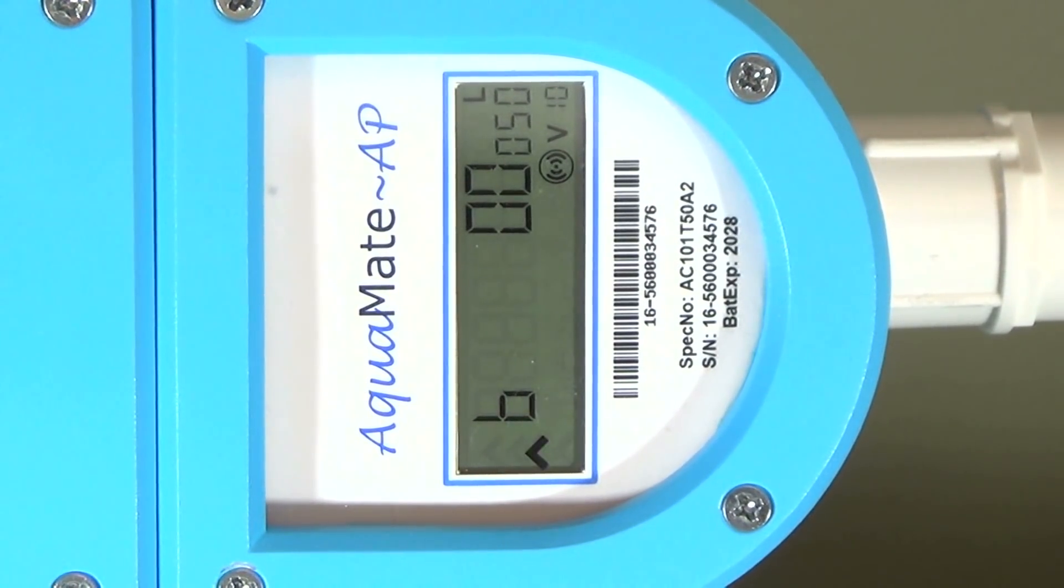Aquamate LCD display switches between showing two values, lifetime usage and available balance every 5 seconds. So the lifetime usage is shown in seven large digits in thousands, thousands of liters, and three small digits showing in liters.